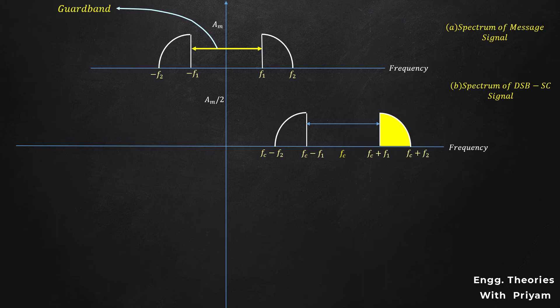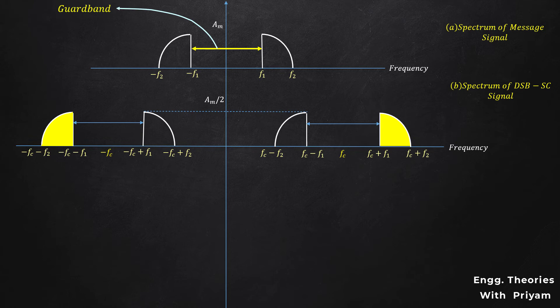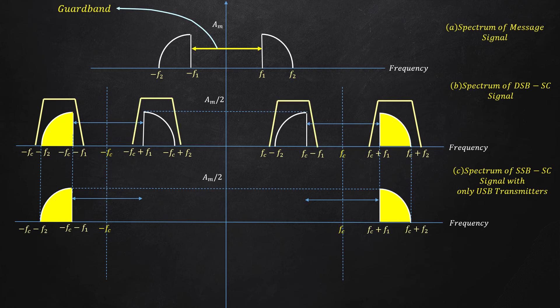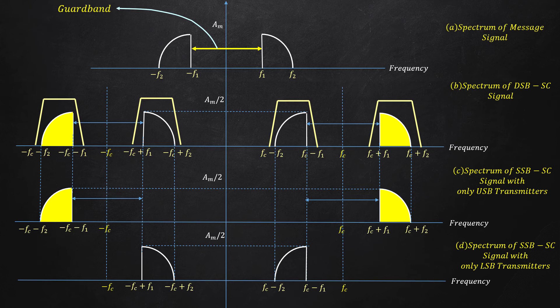Replicas of the upper and lower sidebands are also created in the negative frequency. To generate an upper sideband SSB-SC modulated signal, we pass this DSB-SC modulated signal through a bandpass filter that selects only the upper sideband. No part of the lower sideband gets selected because the guard band separates them. Similarly, to generate a lower sideband SSB-SC signal, we use a bandpass filter selecting only the lower sideband, with no contamination from the upper sideband.